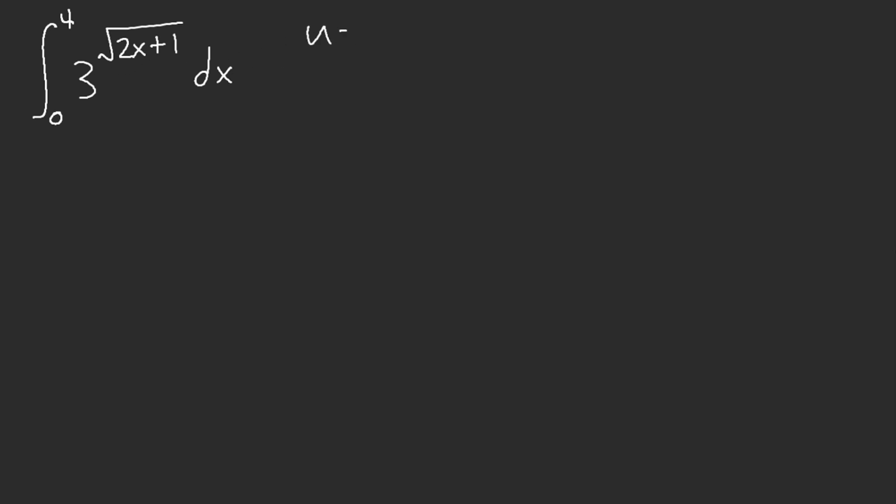We'll just do a forced u substitution. Kind of treat this integral like e to the square root of x, pretty much. So we're going to force sub the square root of 2x plus 1. And we get u squared minus 1 over 2 equal to x, then u du is going to equal dx.